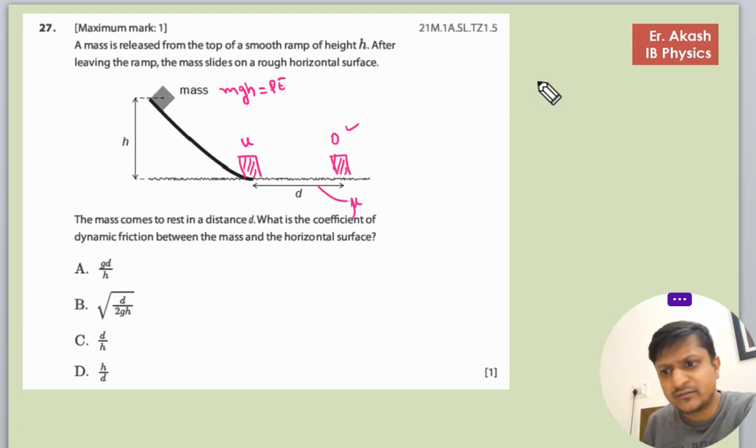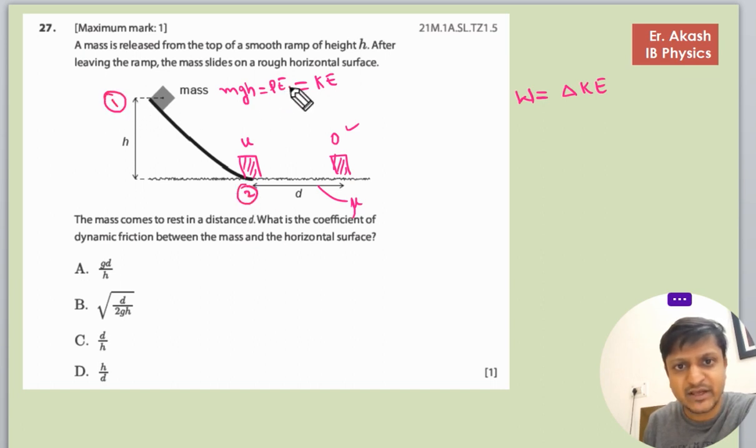We know the energy theorem. The energy theorem says that the work done is the change in kinetic energy. The kinetic energy of this block here, and then this is the work done. The energy at this level should be equal because we know that the total energy is the same. So the PE at 1 and KE at 2 will be equal.